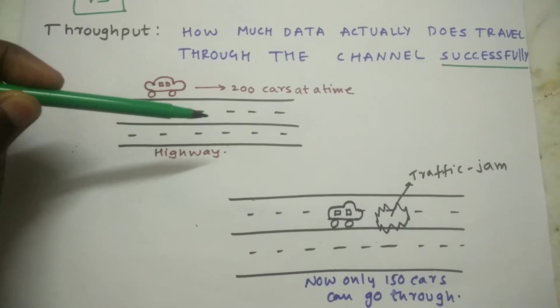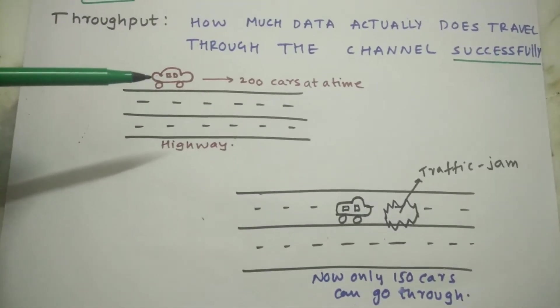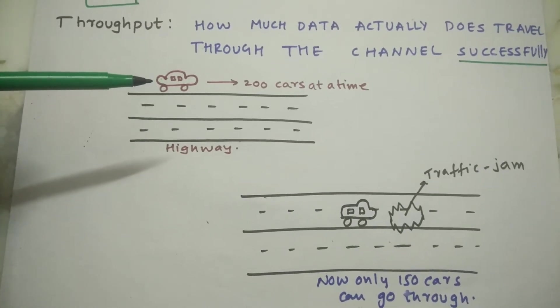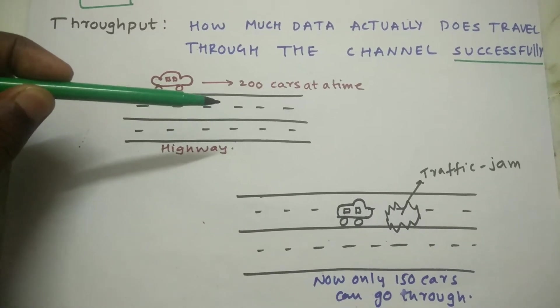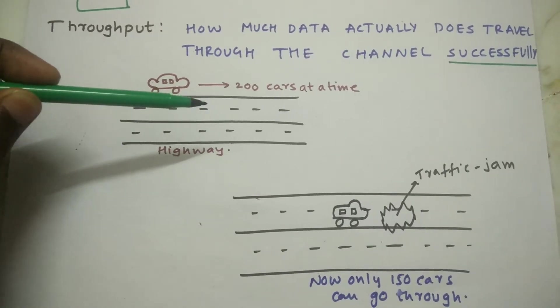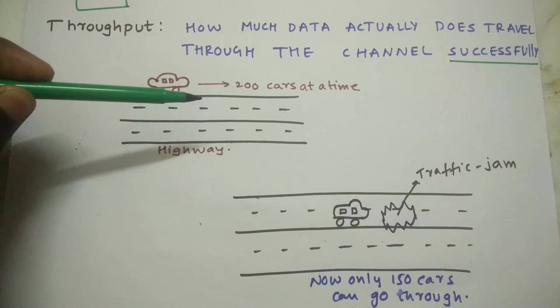But as rainy season emerged, the potholes on this highway. So potholes became more and more and the cars have slowed down on the road.